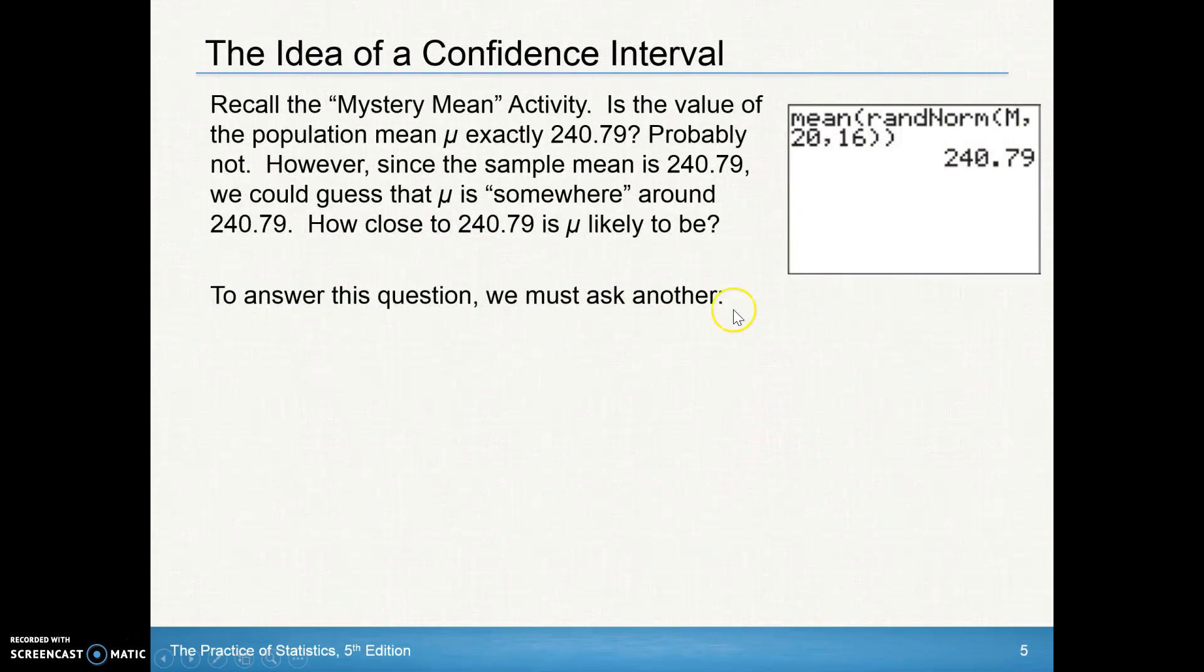So let's go back and look at that activity. We want to know that this is what one sample of 16 came up with when they found the mean of the 16 people drawn from this population. Does that mean that 240.79 is exactly the mu? Probably not. We could be way off, but probably, if I was a betting person, we'd probably say you're pretty close. So we could guess that it's somewhere around there. But the question is how close to 240.79 is mu likely to be?